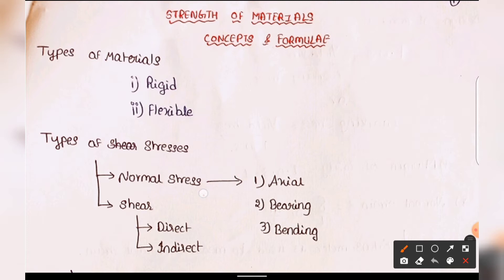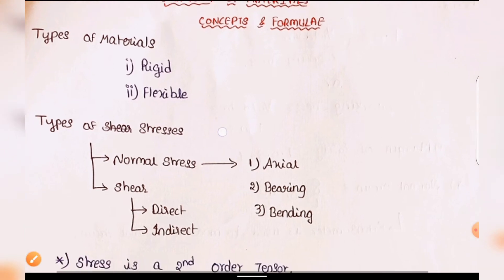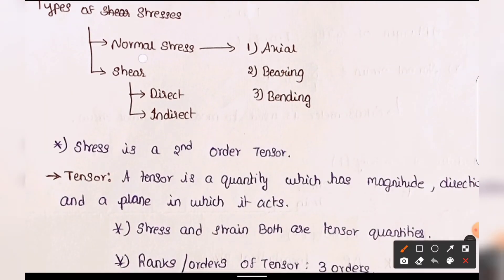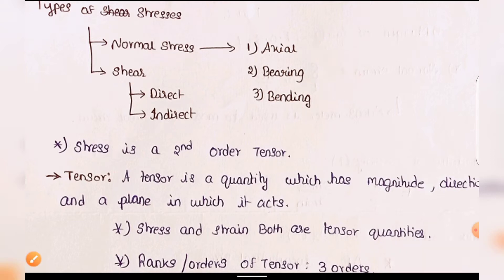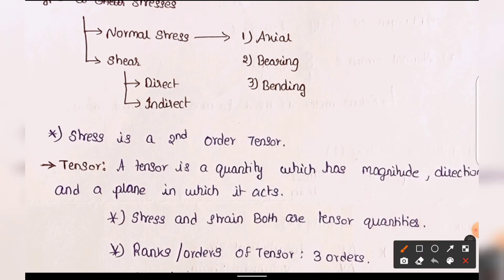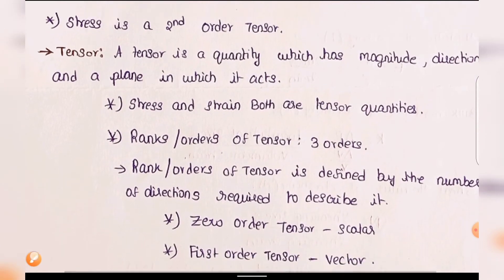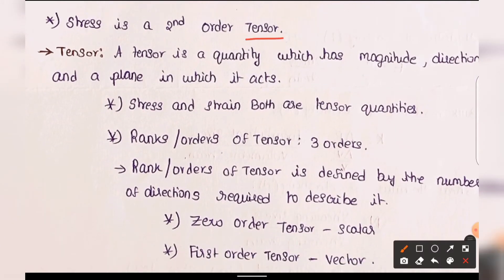Coming to types of stresses, there are generally two types: normal stress and shear stress. Under normal stresses, we have axial, bearing, and bending stresses. Shear stress is a second order tensor, which we will discuss in this video.